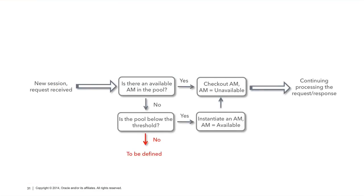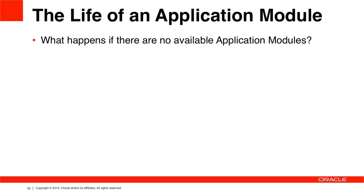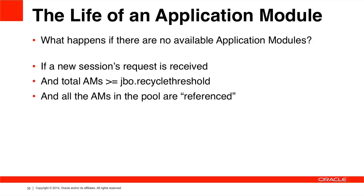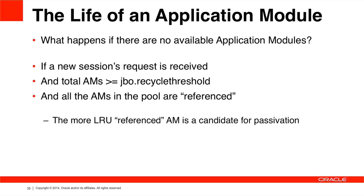So now we've covered the complete lifecycle of an Application Module from request to response. Returning to our diagram, we haven't covered the scenario where there are no available AMs in the pool and we've exceeded the JBO Recycle Threshold. What happens then? If a new session's request is received and the total number of Application Modules in the pool is greater than or equal to the JBO.Recycle Threshold, and all AMs in the pool are currently Referenced with none available, the most least recently used Referenced AM becomes a candidate for Passivation — and we're looping around to the discussion on Passivation and Activation.